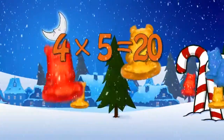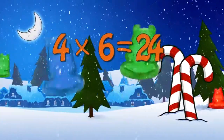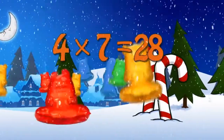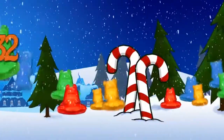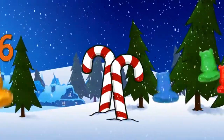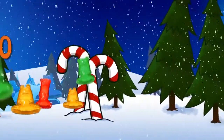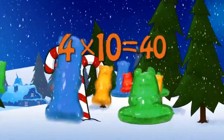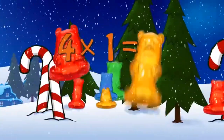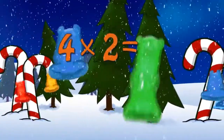Four times five is twenty. Four times six is twenty-four. Four times seven is twenty-eight. Four times eight is thirty-two. Four times nine is thirty-six. Four times ten is forty.